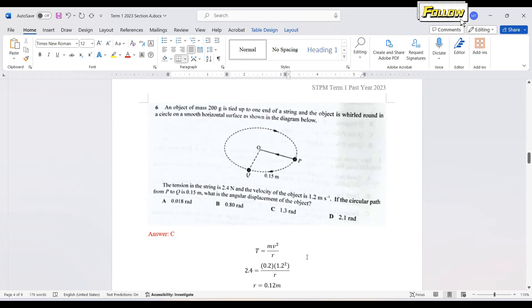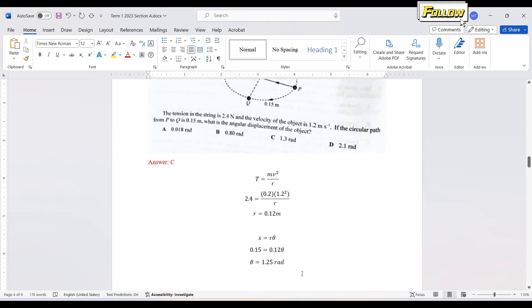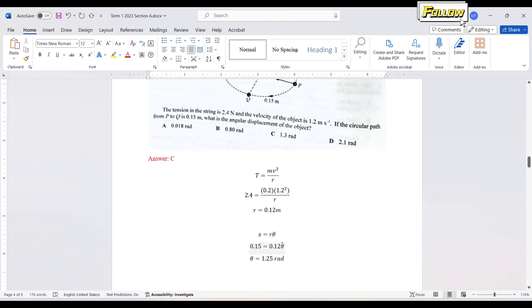Based on what we have learned, the tension is the centripetal force to provide the circular motion. We have the tension equal to MV squared over R and using this equation, we can obtain the radius of the circular path. The tension 2.4, mass 0.2 kg, V is 1.2. And then here we can get the R, 0.12 m. After this, you can just apply the formula of S equal to R theta to obtain the radian, which is the angular displacement. The answer should be C, 1.25 radian, which is almost 1.3 radian.